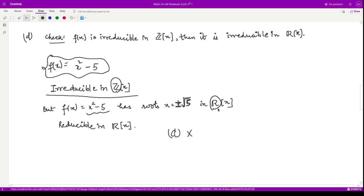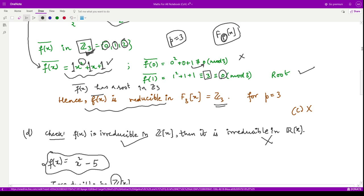But clearly you see that this polynomial has roots ±√5, and these are real numbers. Therefore this polynomial f(x) = x² - 5 has a root in R, which implies that it is reducible in R[x]. So we saw it is irreducible in Z[x], but it is reducible in R[x], therefore this option is incorrect.